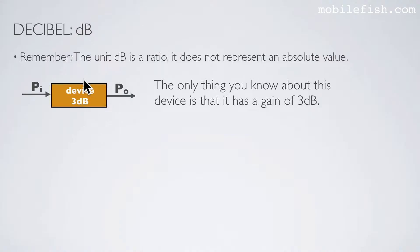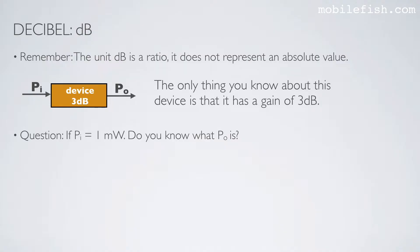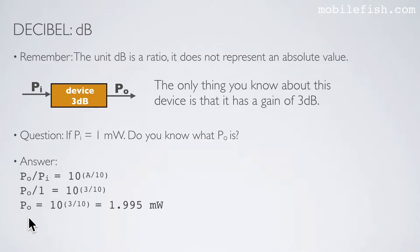If you look at this device, the only thing you know is that it has a gain of 3 dB. You don't know its input power and you don't know its output power. However, if the input power is 1 milliwatt, you can calculate the output power using this equation. The input power is 1, so the output power is 1.995 milliwatts.